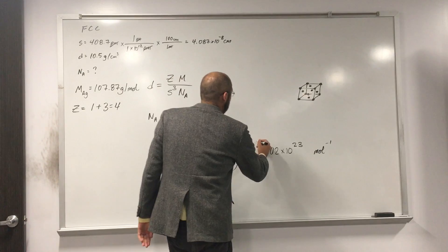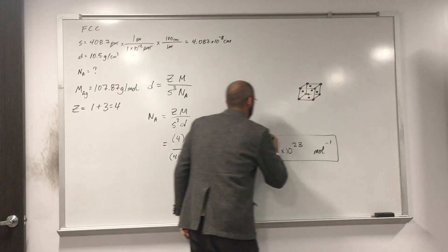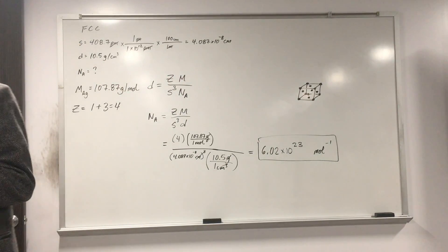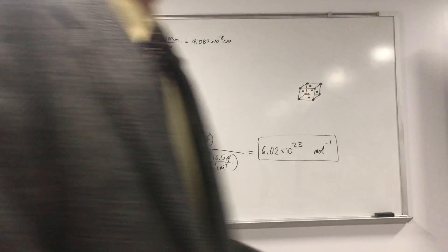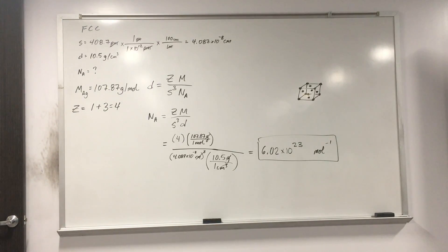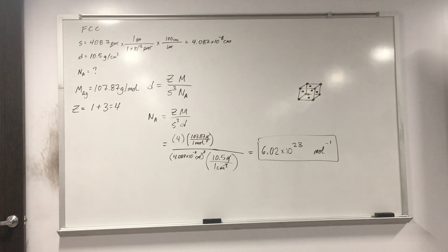6.022 times 10 to the 23rd per mole is Avogadro's number. So this is kind of another way to get a good perspective on how to calculate Avogadro's number, another way to calculate it. So it's more of this type of problem, more of a knowing which formula we're going to have to do and then rearranging that formula. Good job guys.